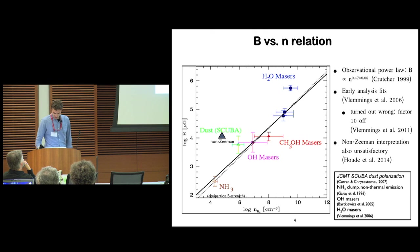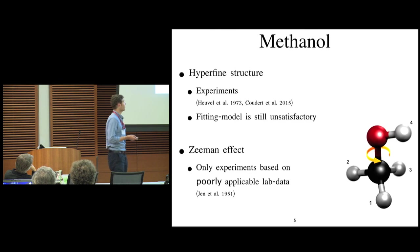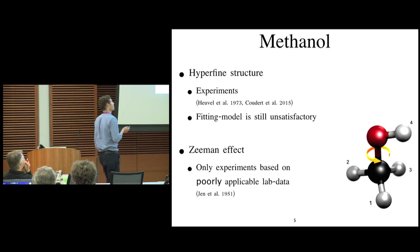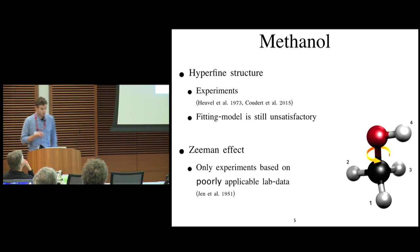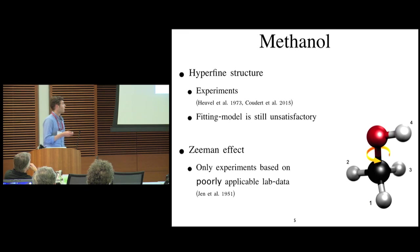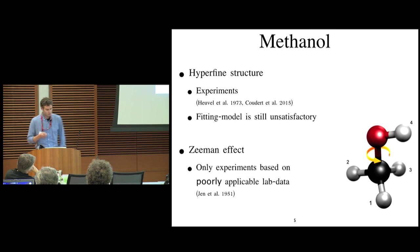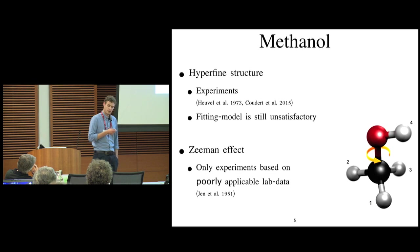So we need to determine, actually, the hyperfine structure and the Zeeman effect of Methanol, and there's two papers on the hyperfine structure of Methanol. One from 1973, also done in Nijmegen, where I did this research, by Heuvel et al. and one from one year ago, by Kuder. And the fitting model they've come up with is still unsatisfactory. They have to deviate from the ab initio values very much.